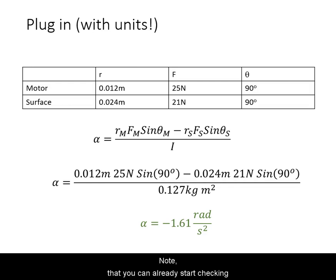Note that you can already start checking whether the answer is sensible in sign. Because we are expecting the grinding wheel to slow down, hence the sign of the angular acceleration must be opposite that of the initial angular velocity.